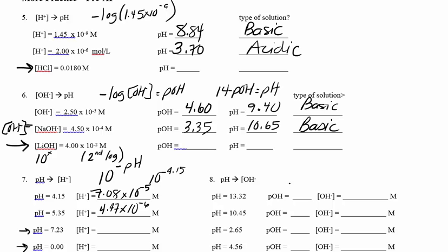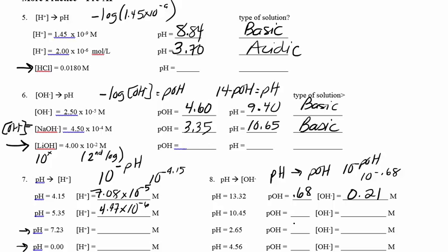For these last ones, one more step: from pH, go to pOH using 14 minus pH, then 10 to the negative pOH. So 14 minus 13.32 leaves pOH of 0.68; 10 to the negative 0.68 gives a concentration of 0.21 molar. For pH of 10.45: 14 minus 10.45 equals 3.55; 10 to the negative 3.55 gives 2.82×10⁻⁴.